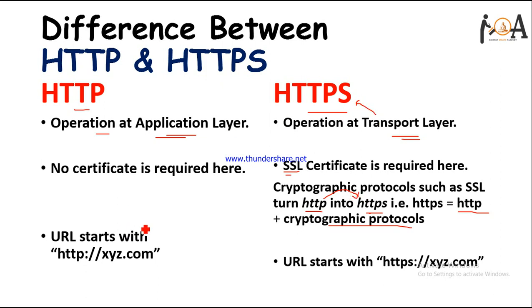In examples you may have seen, the URL of HTTP starts with 'http', whereas for HTTPS the URL starts with 'https' and a padlock icon is shown, ensuring that your data is safe on that website and will not fall into the hands of hackers.